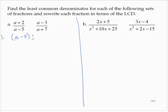(a + 7) cannot be factored further, so we write it as (a + 7).